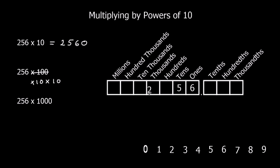The hundreds move into the ten thousands, the tens move into the thousands, and the ones move into the hundreds — because we multiply by 10 two times, moving the digits up twice. So we've got 2 in the ten thousands, 5 in the thousands, and 6 in the hundreds. We add a zero into the tens column and a zero into the ones column, giving us 25,600.